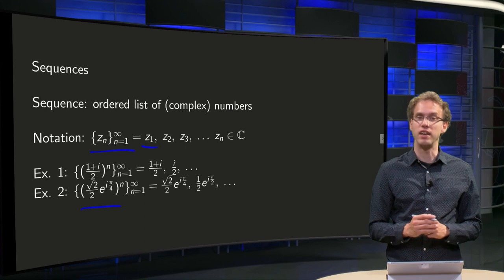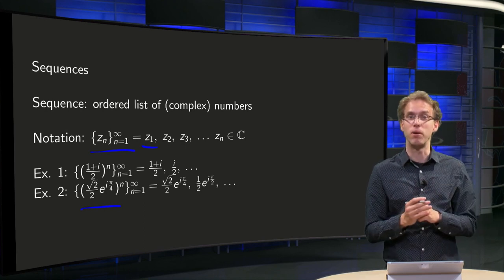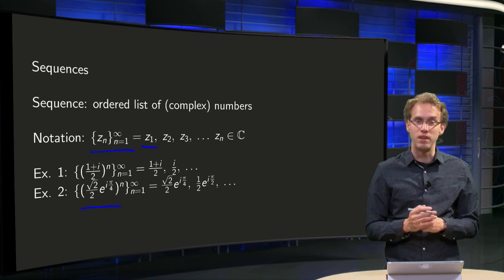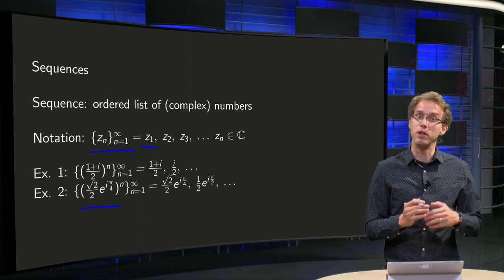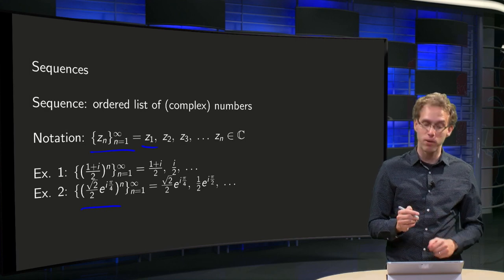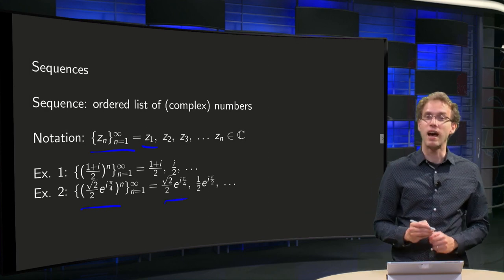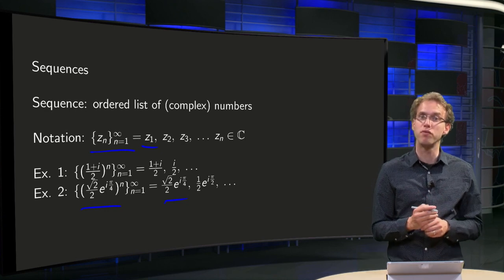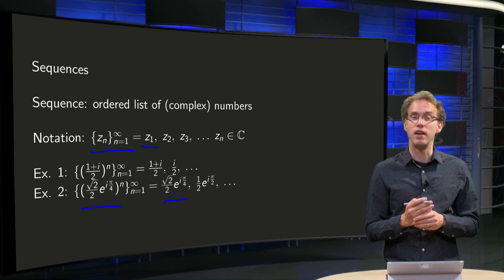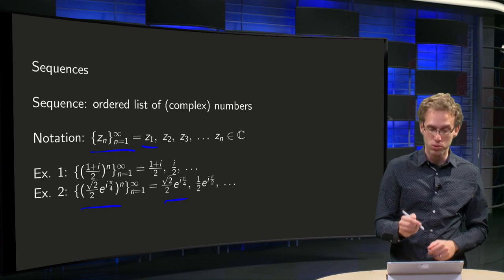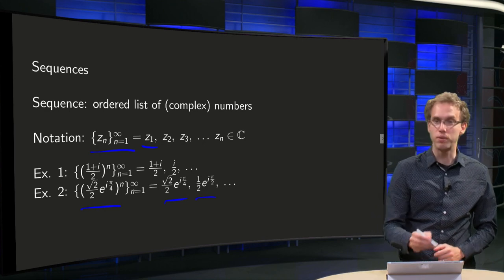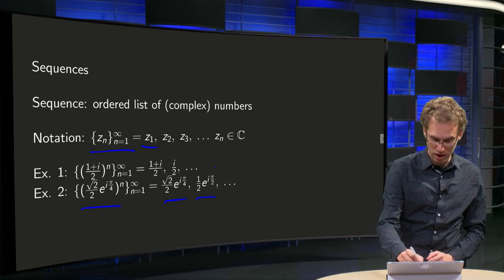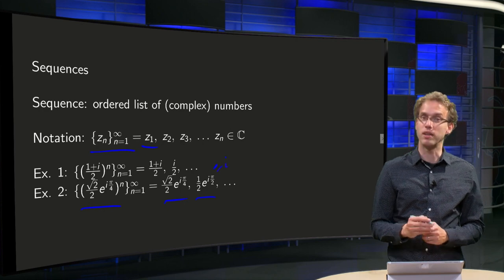Second example here: z_n = (√2/2)^n e^{iπ/4n}. So z_1 would be (√2/2)e^{iπ/4}, and if you plug in n=2, (√2/2)^2 becomes 1/2, and 2·π/4 = π/2, so you get (1/2)e^{iπ/2}. Well, this quantity equals i of course, so you get in fact i/2.